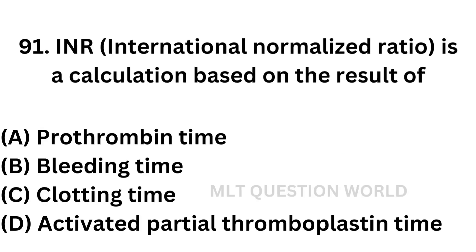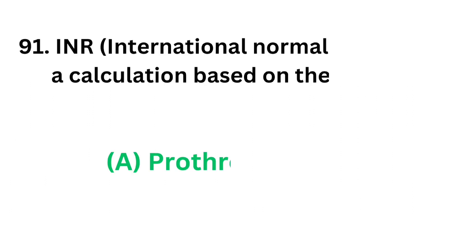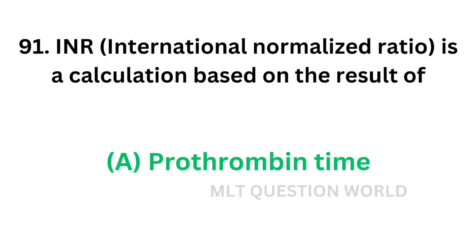Question number 91: INR — international normalized ratio — is calculated based on the result of. Option A: prothrombin time. Option B: bleeding time. Option C: clotting time. Option D: APTT (activated partial thromboplastin time). Among these, only prothrombin time requires INR. So the correct answer is Option A, prothrombin time — INR is only calculated in the case of prothrombin time.